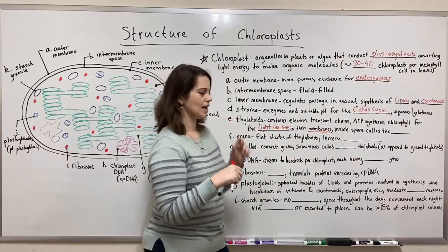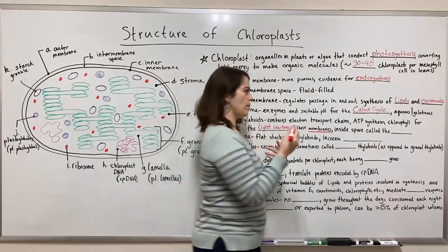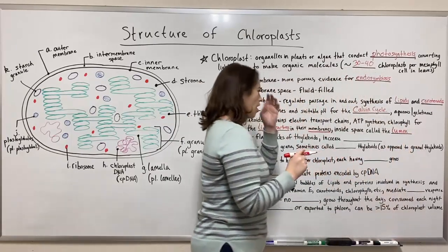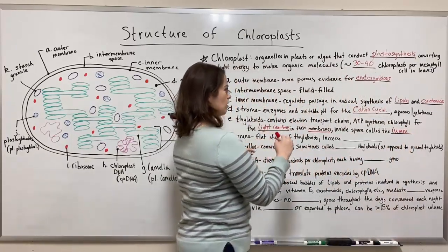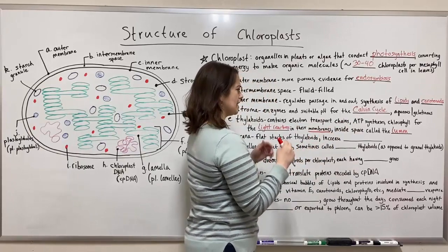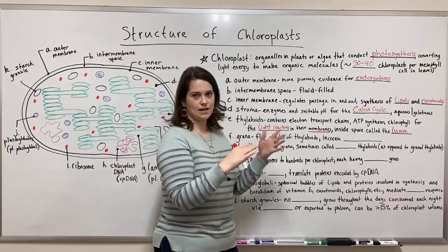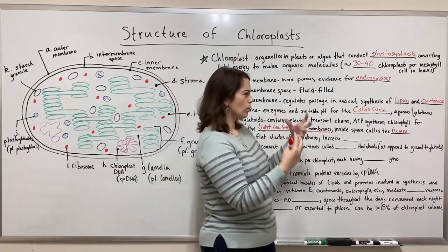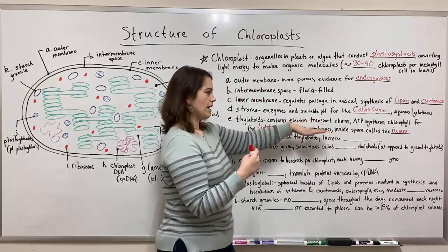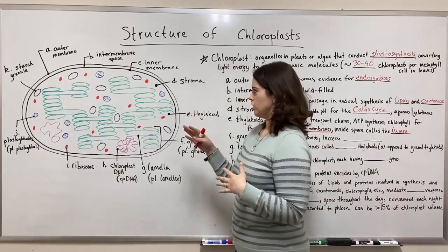The inside space of the thylakoids is called the lumen. We often talk about the lumen particularly when discussing the electron transport chains and the ATP synthases, because it is the buildup of hydrogen ions on one side of the thylakoid membrane that creates a gradient that powers the ATP synthases. So if you're studying the light reactions, you're often talking about what's happening in the lumen versus the stroma.